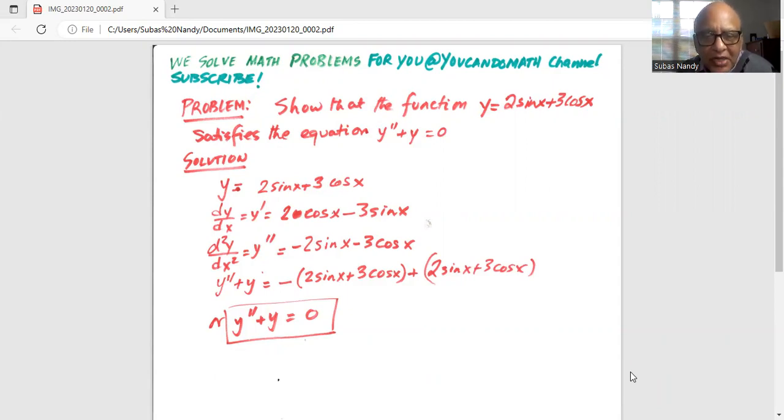Hence y'' + y equals... I'll take the minus outside the parenthesis: -(2sin(x) + 3cos(x)) + y, where y is 2sin(x) + 3cos(x).